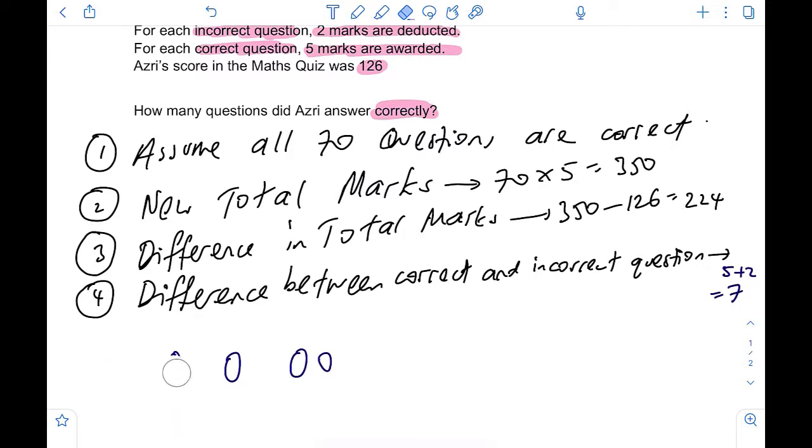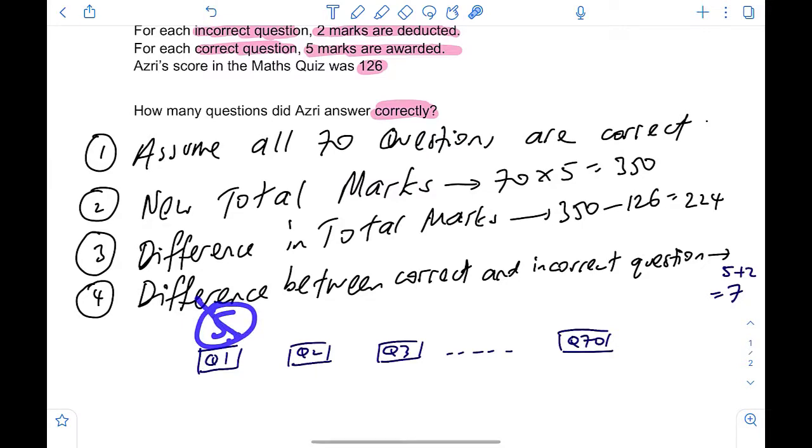So for example, let me illustrate this step with the marks for a certain question. Let's say question one, question two, question three, all the way to question 70. Now let's say you assume question one to be correct. Then that question one, you will get five marks. But what if this question is actually wrong? You would have lost the five marks and you will be deducted two marks as well. So in total, the difference is a seven marks loss between a correct and an incorrect question.